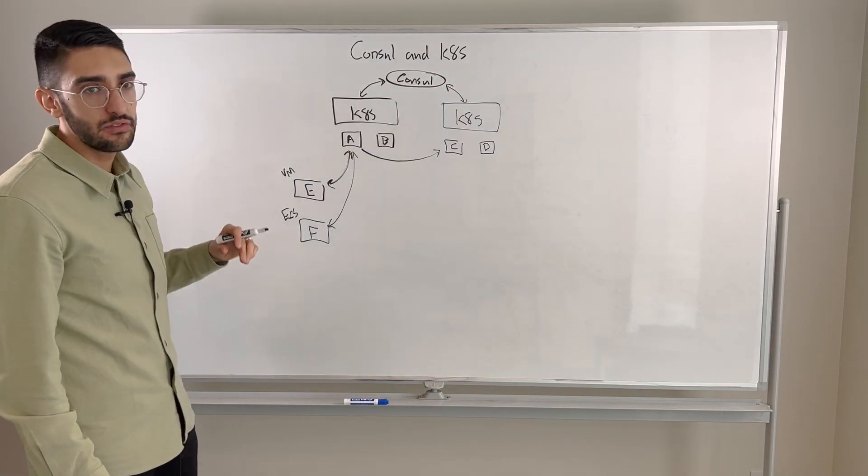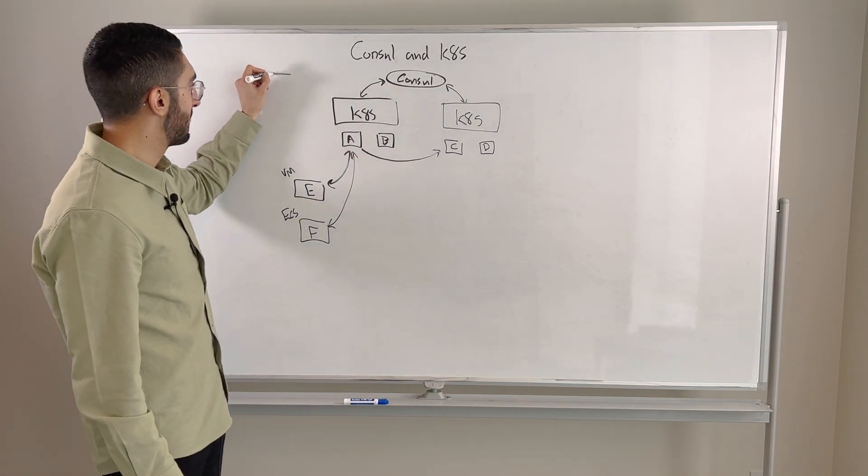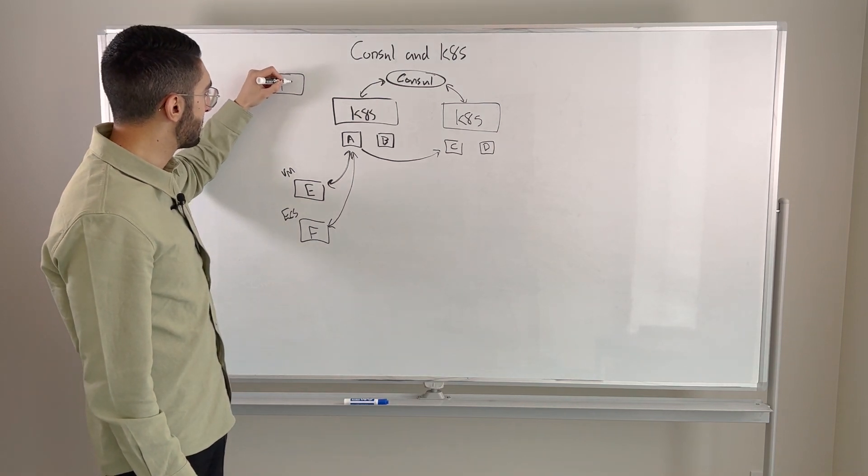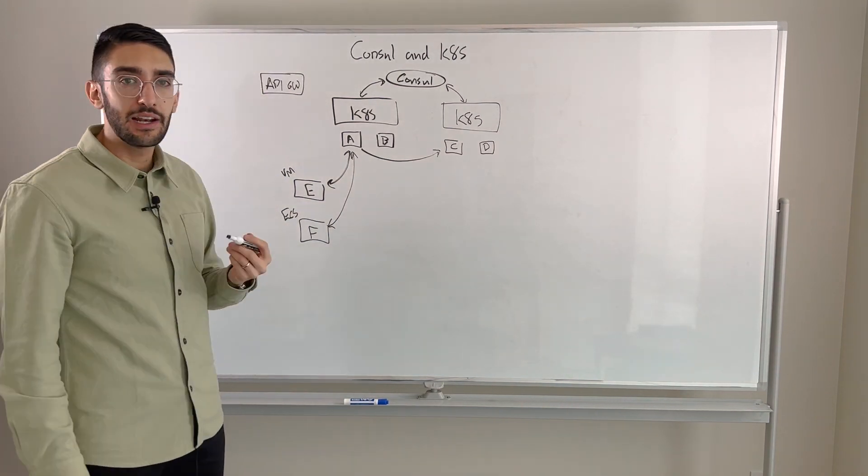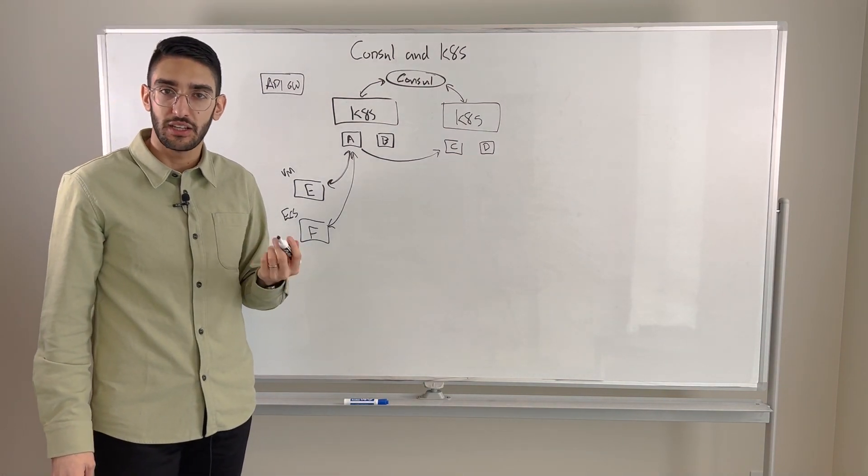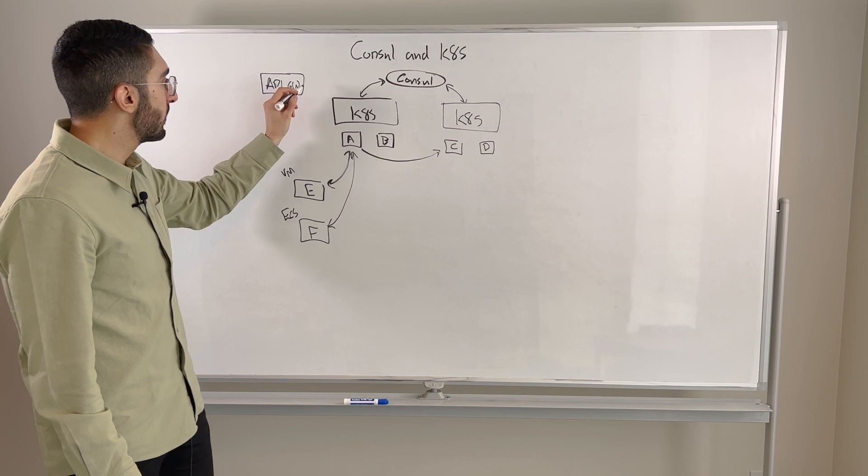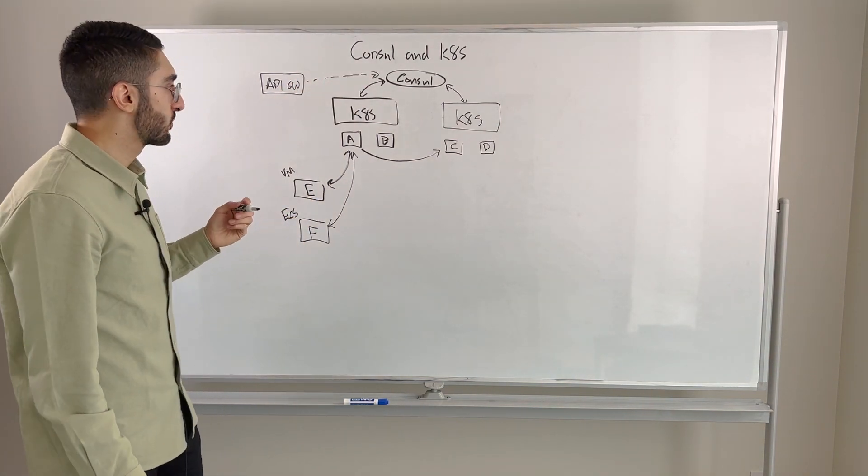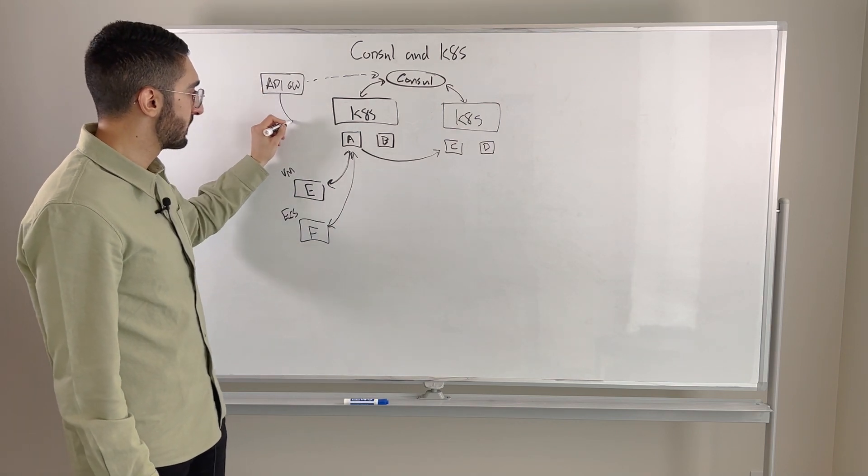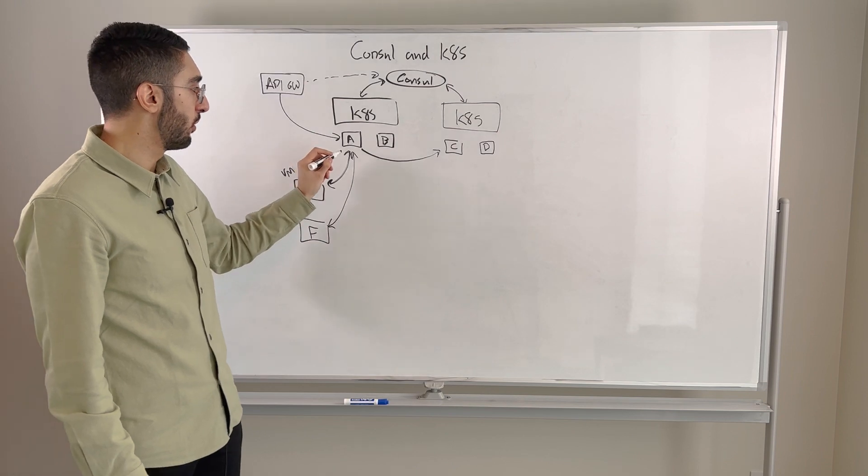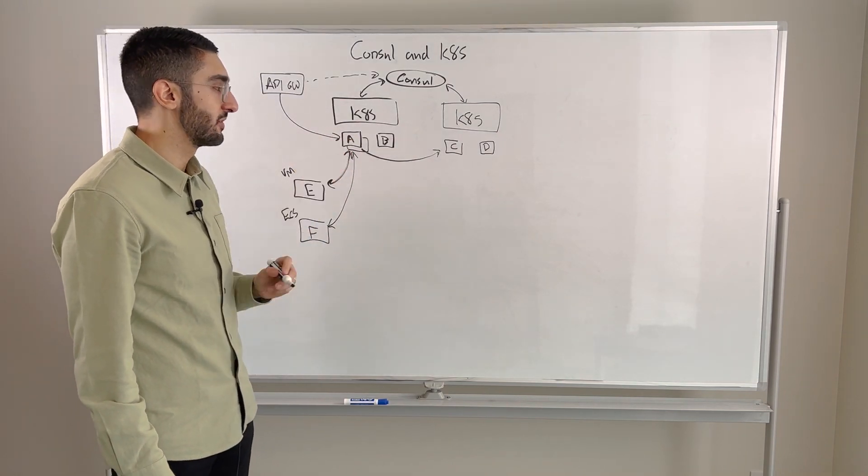And then we can even connect that service discovery to solutions like API gateways. So Consul has native support for an envoy-based API gateway, but it also integrates with popular solutions like Traefik, Nginx, HAProxy, Kong, etc. So those API gateways can also similarly query Consul and say, if this request is coming in and we need to route to the service, where's that service running? And there's potentially multiple copies of it, so we need to load balance across them.